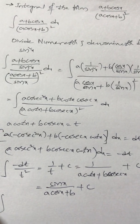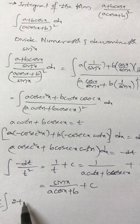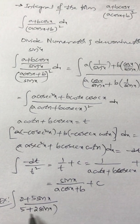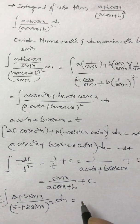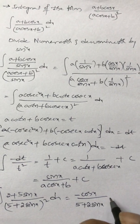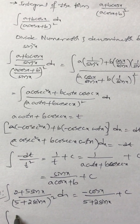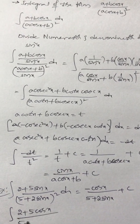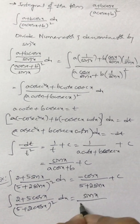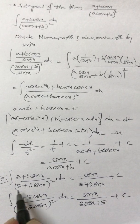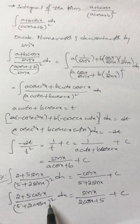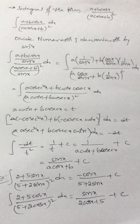For example, the integral of (2 + 5 sin x) / (5 + 2 sin x)² dx equals −cos x / (5 + 2 sin x) + c. And if it is the integral of (2 + 5 cos x) / (5 + 2 cos x)² dx, the answer is sin x / (2 cos x + 5) + c.